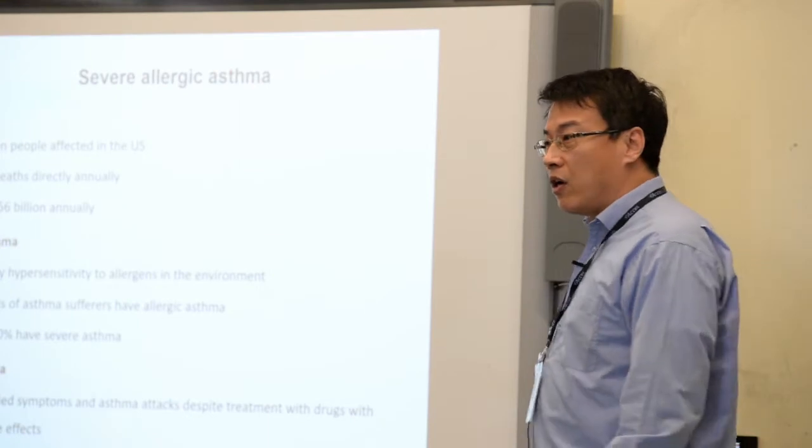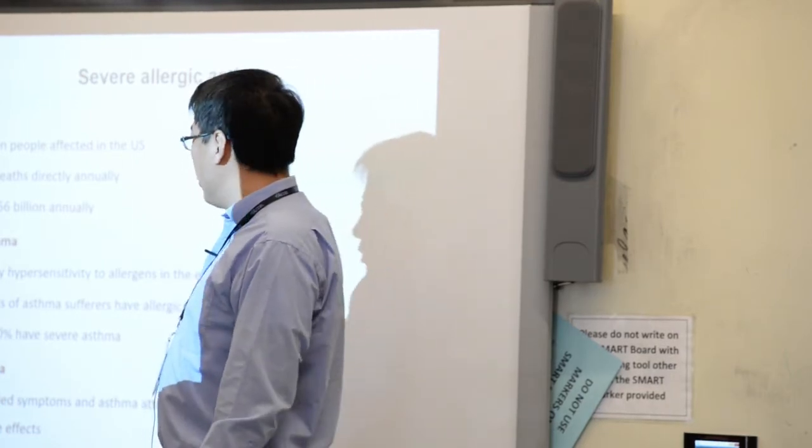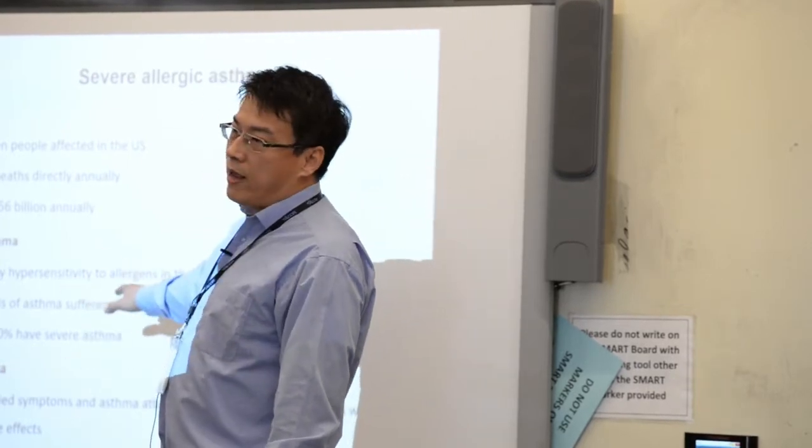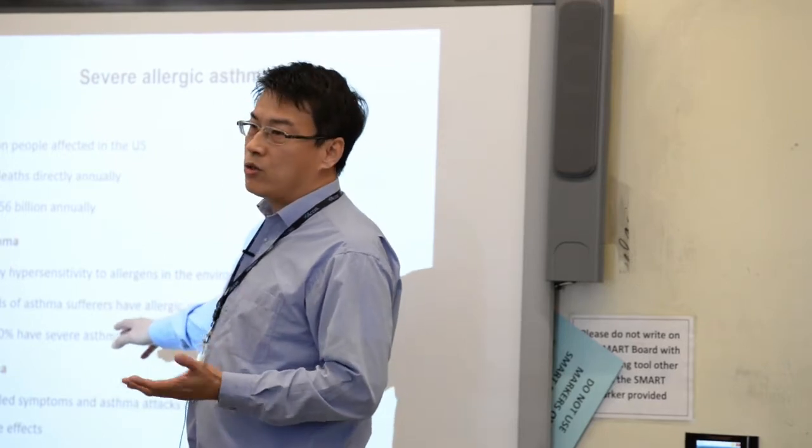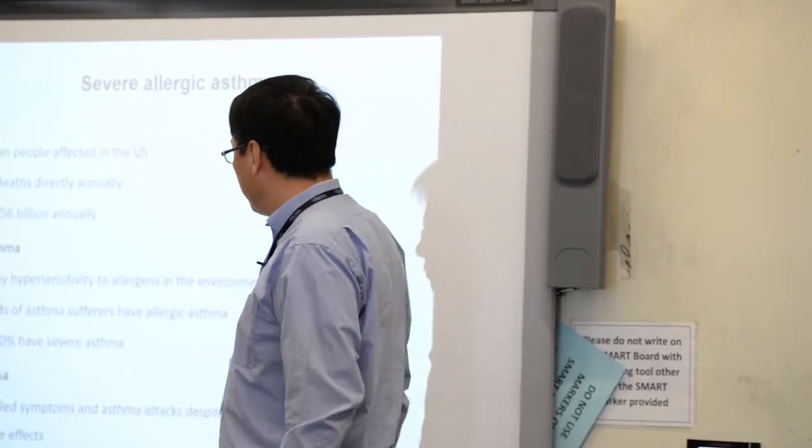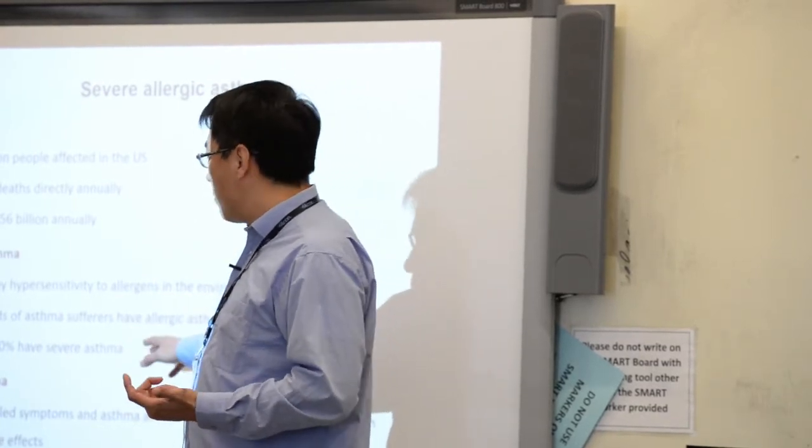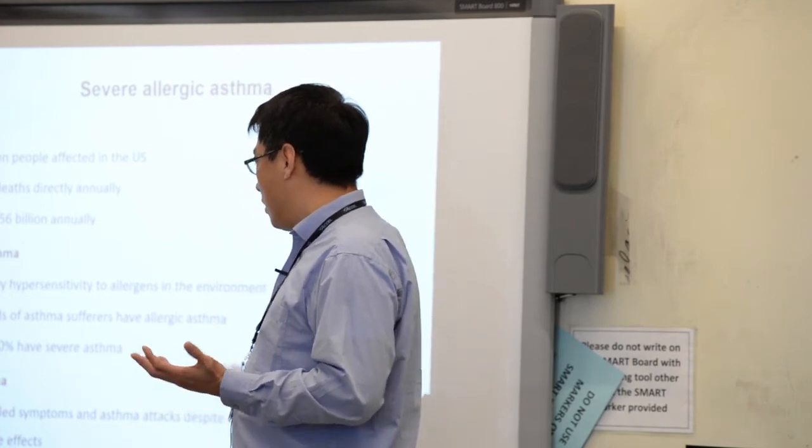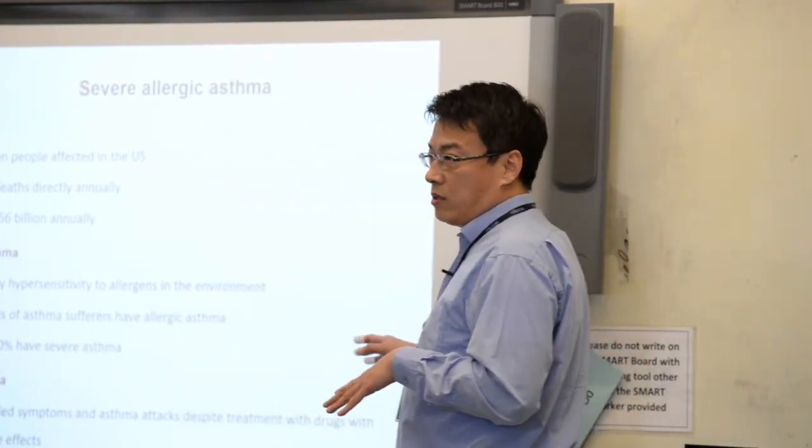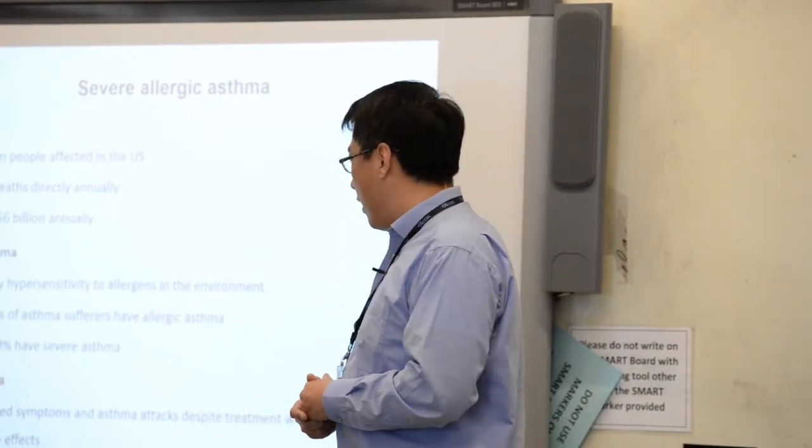Take, for example, severe allergic asthma. First of all, asthma affects millions of people in the U.S., causing more than 3,000 deaths per year and lots of money to manage. About two-thirds of asthma can be characterized as allergic asthma, triggered by allergens like most commonly pollen or dust mites. Ten percent of allergic asthma can be characterized as severe asthma, which means uncontrolled symptoms and frequent asthma attacks despite treatment with highly toxic drugs with lots of side effects, for example high dose corticosteroids. So far, there's no cure.